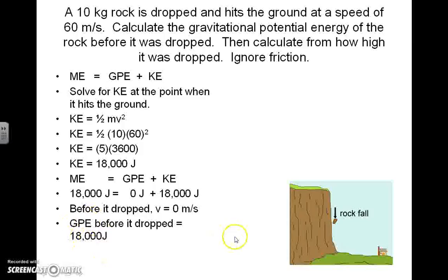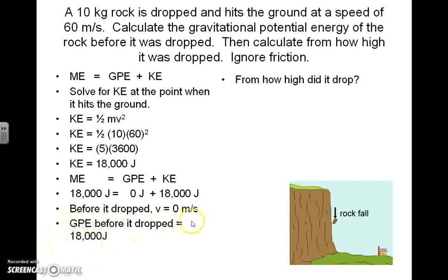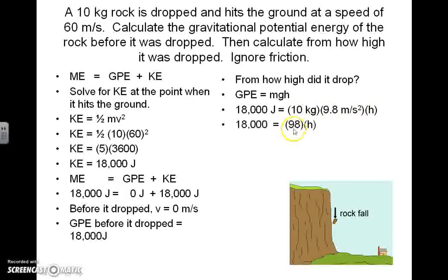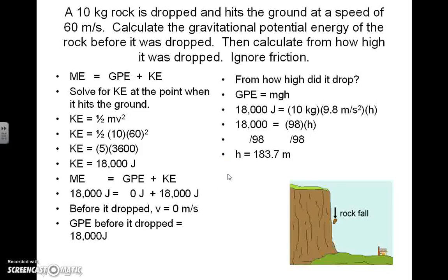Now for the second part: from how high was it dropped? We have the gravitational potential energy of 18,000 joules, mass of 10 kg, and g = 9.8 m/s². Setting up the equation: 18,000 = 10 × 9.8 × h, which gives 98h = 18,000. Dividing both sides by 98, we find the rock was originally dropped from a height of 183.7 meters. This problem has a two-part final answer.